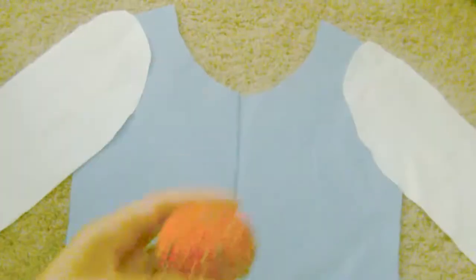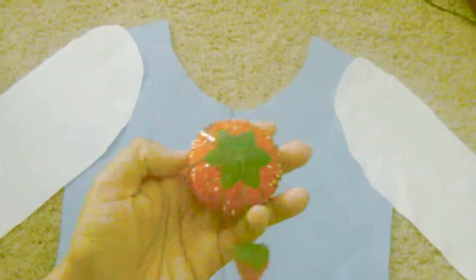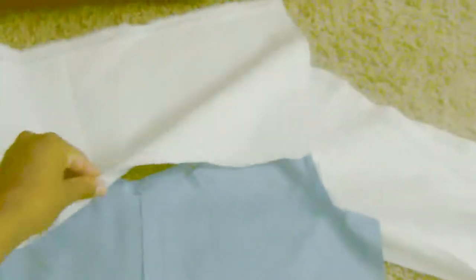Once you have your center backs and center front sleeves and shirts together that are sewn, now you can start on the collarbone area and work on how to make that.